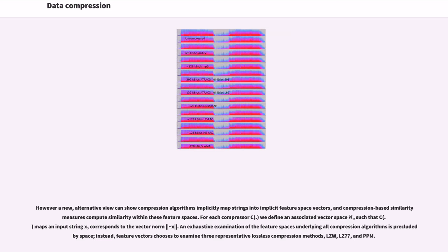However, a new alternative view can show compression algorithms implicitly map strings into implicit feature space vectors, and compression-based similarity measures compute similarity within these feature spaces. For each compressor C, we define an associated vector space such that C maps an input string x, corresponds to the vector norm. An exhaustive examination of the feature spaces underlying all compression algorithms is precluded by space. Instead, feature vectors choose to examine three representative lossless compression methods: LZW, LZ77, and PPM.